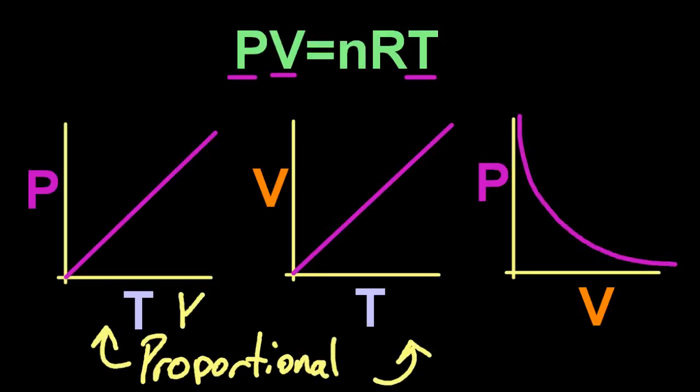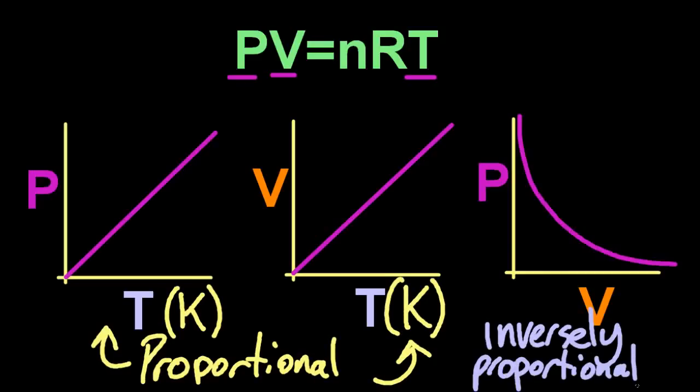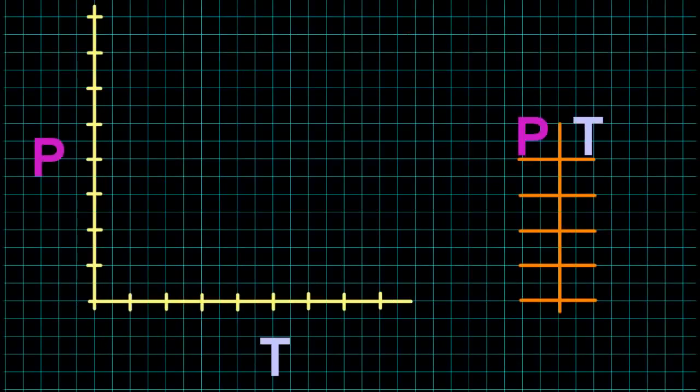So by proportional, I mean if you double one, the other one doubles. Triple one, the other one triples. But it only works if the temperature is in Kelvin. And inversely proportional, one goes up, the other goes down.